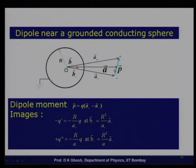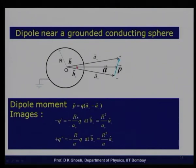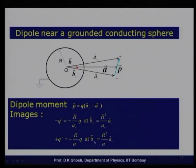Notice that the +q will have an image charge −q' there, and the −q will have another image charge, but the magnitudes of the image charges depend on the distance of the object from the center. Since the two charges of the dipole are at slightly different distances, the image charges are not exactly equal in magnitude. So as a result the image charges will leave a net charge on the sphere.